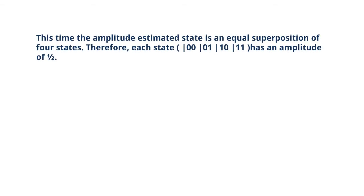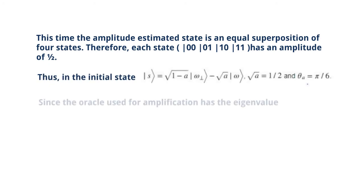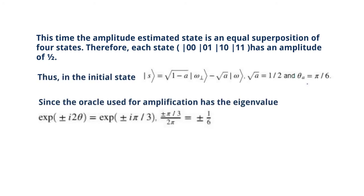This time the amplitude estimated state is an equal superposition of four states. Therefore, each state has an amplitude of one-half. Thus, in the initial state, since the oracle used for amplification has the eigenvalue, is the output expected from quantum phase estimation.